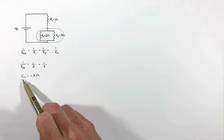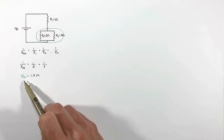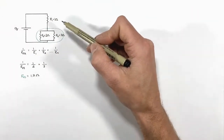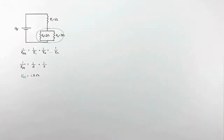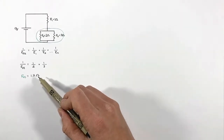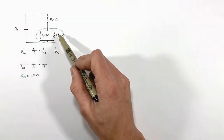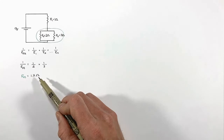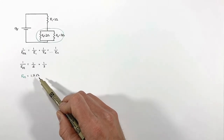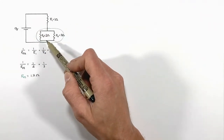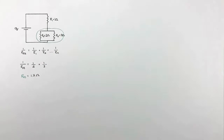I'm going to call it R23 — realize it's not the equivalent resistance of the entire circuit, but we could take these two resistors and replace them with a single 1.2 ohm resistor and this circuit would behave in the same way.